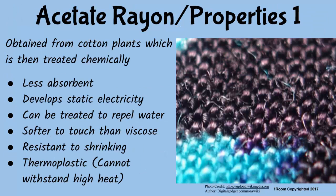Acetate rayon is a product of cellulose obtained from the cotton plant, which is then treated chemically to make acetate rayon. So viscose comes from wood pulp while acetate comes from the cotton plant. One key difference is that acetate rayon is less absorbent than viscose, and thus dries easily.